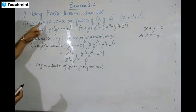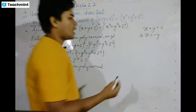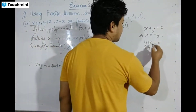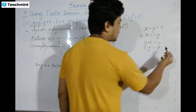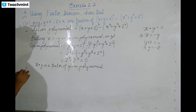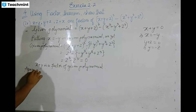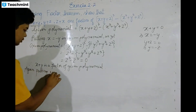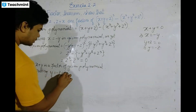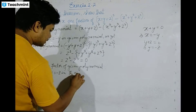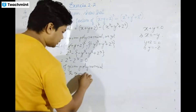Now we'll check y plus z. Y plus z is equal to 0, so y is equal to minus z. Putting y equal to minus z in the given polynomial.